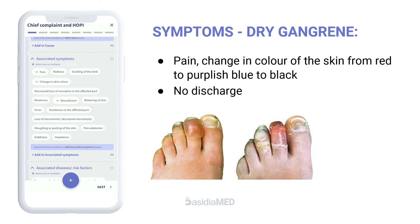Symptoms specific to dry gangrene are pain in the affected part and change in color of the skin from red, to purplish-blue, to black, with no discharge.